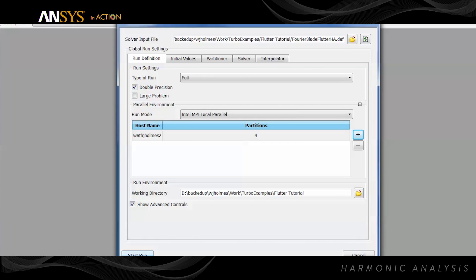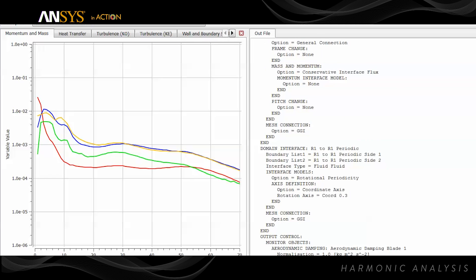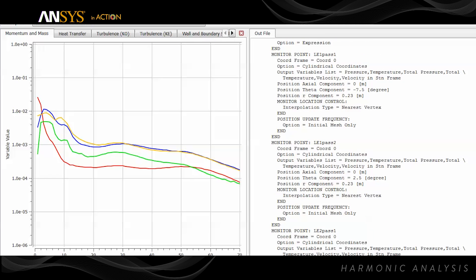While this behavior spans the full wheel, the FEA and CFD analysis still only require a portion of the wheel to perform the analysis. One blade sector is used for the FEA analysis and two are used for the CFD.